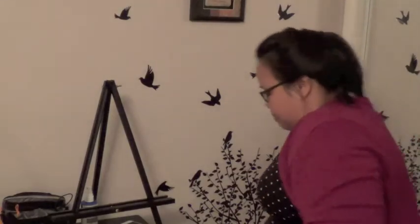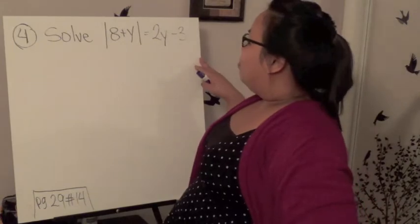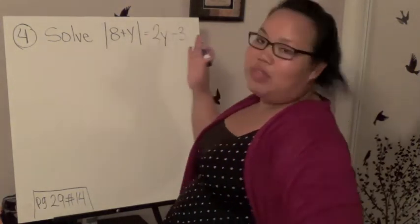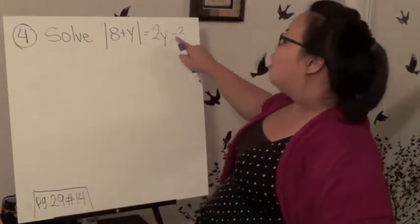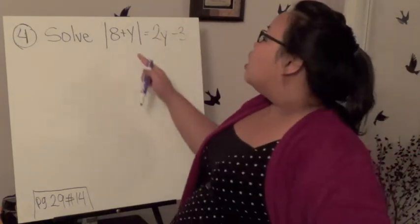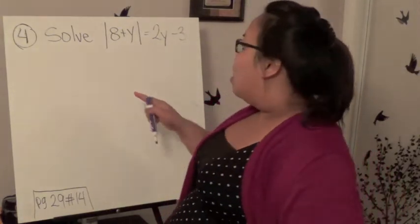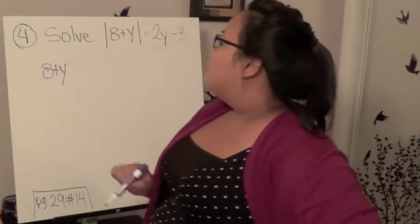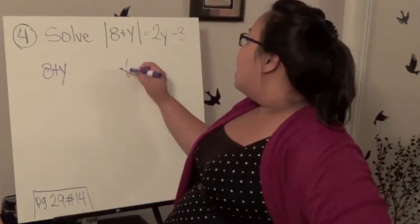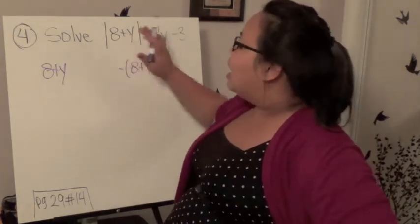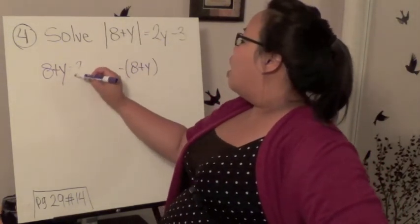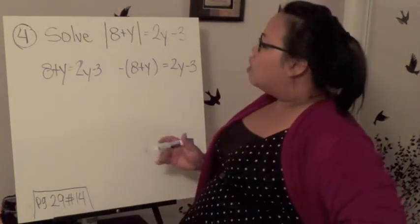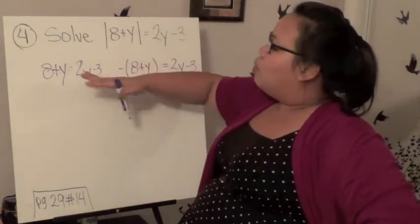We have one last problem to solve. This problem is more complicated because it's two equations equal to each other. If there was something attached to this, like a plus 3, I'd have to get rid of that before solving. I know there's a negative here, but as long as the whole thing is not negative, we can still solve this problem. We're going to split it into two problems. The inside of an absolute value can be either positive or negative. So if this is 8 plus y, we can have 8 plus y, or we can have negative 8 plus y. I end up with equals 2y minus 3 for both.